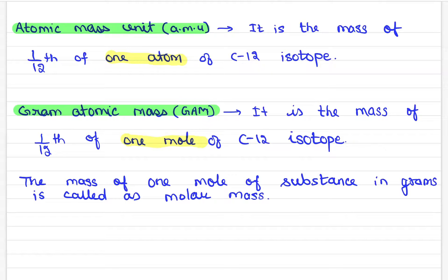The basic difference between AMU and gram atomic mass is one mole. And when this one mole is very common, we have to replace the gram atomic mass with molar mass. So, molar mass is mass of one mole of substance in grams. Generally, we say that.